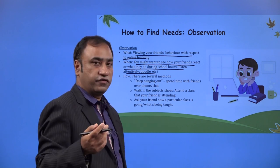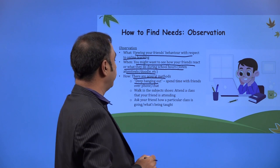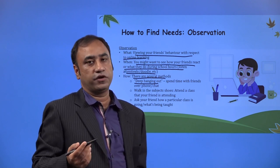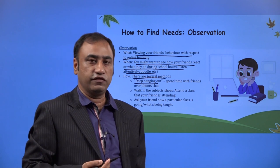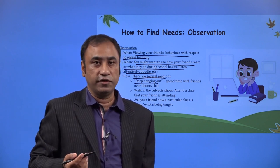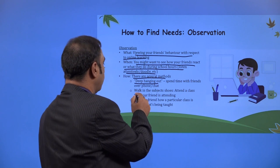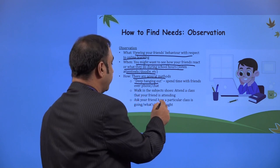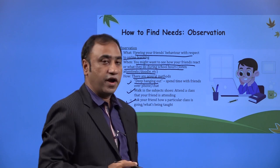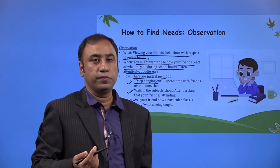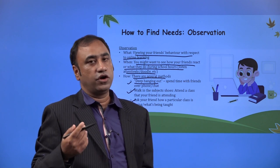What are the behaviors? What do they do? There are several methods. Deep hanging out — spend time with friends over phone and chat. You can ask them by having separate calls what they do, how they feel during online classes, whether they are learning effectively or not. Walking in the subject's shoes — attend a class your friend is attending, ask how a particular class is going, what's being taught. These are the ways to find needs: talking to people, taking interviews, asking questions, and conducting surveys.